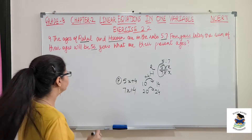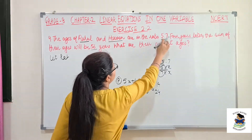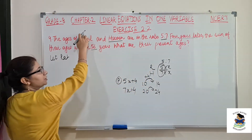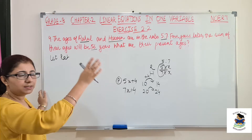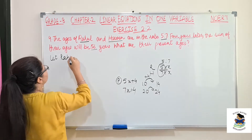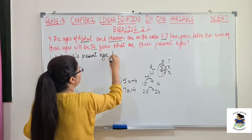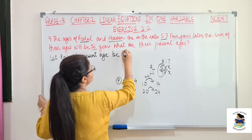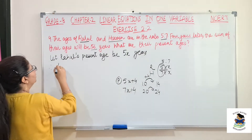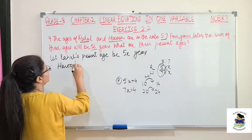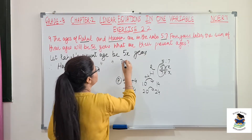Now let's write this formally. The ratio is given as 5 is to 7, so the first number goes with the first person and the second number with the second person. Let Rahul's present age be 5x years. Therefore Haroon's present age will be 7x years.